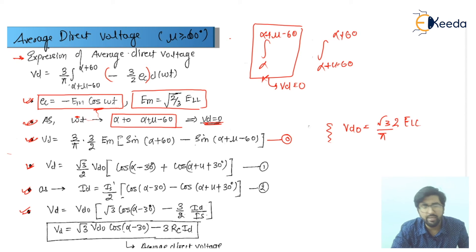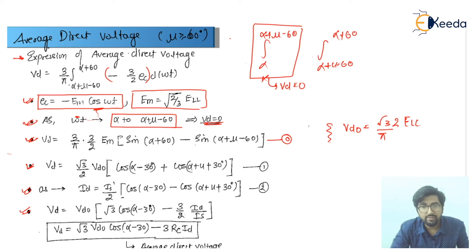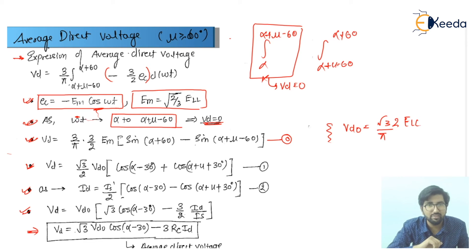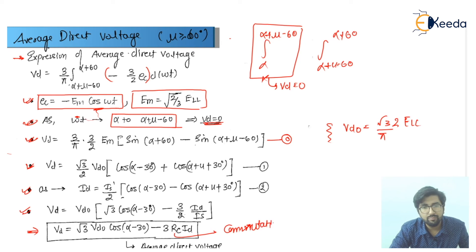After these manipulations, you will get VD equal to VD0·root(3)·cos(alpha minus 30) minus (3/2)·ID. This is basic mathematics — you just put the values for the different variables shown here, which were already discussed in the previous lectures. We can write this as: VD equals root(3)·VD0·cos(alpha minus 30) minus 3·RC·ID. This is a similar equation to the one for mu less than 60 degrees, where RC is the commutation resistance.